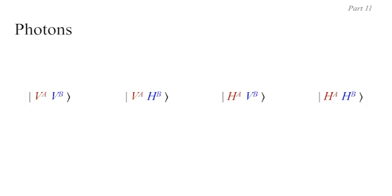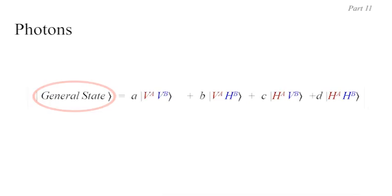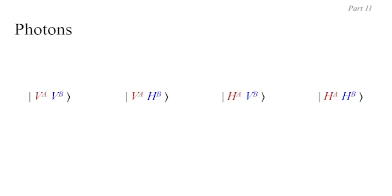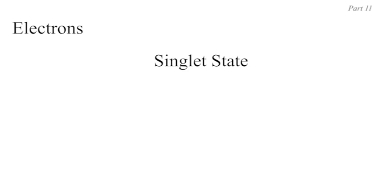We didn't spend much time on the triplet state, but we concentrated on the singlet state where the spins of the entangled electrons were opposite. Now I want to make a mapping from what we did with electrons to what we will use for photons. Without launching into another load of mathematics, I want to suggest that the state vectors in our new four-dimensional Hilbert space for two entangled photons can be written as Bell states. There are four such states; the other two simply have a negative sign instead of a positive sign inside the bracket.